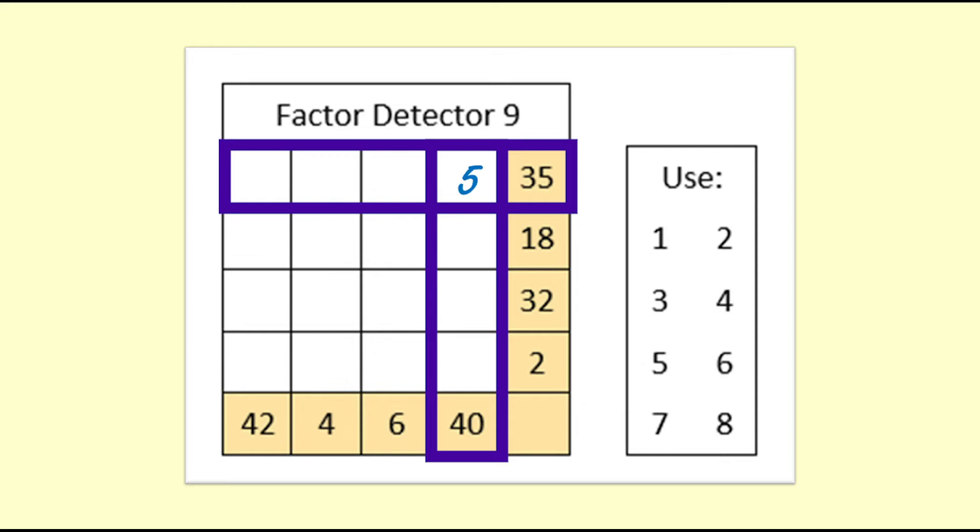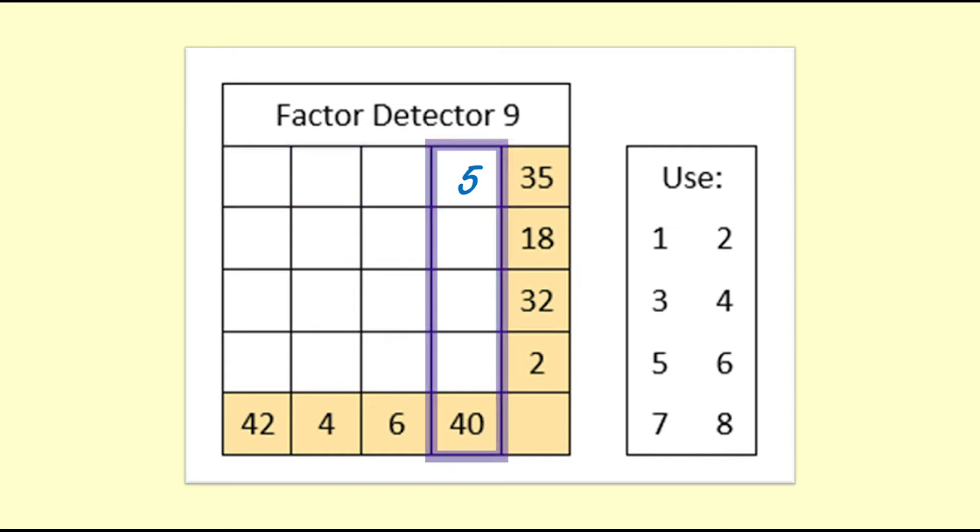So we put the 5 into the cell that is in the 35 row and the 40 column. We cross out the 5 as we have used it. We know that 35 is 5 times 7, so we know the 7 will go in this row and now we need to work out which column to put it in.